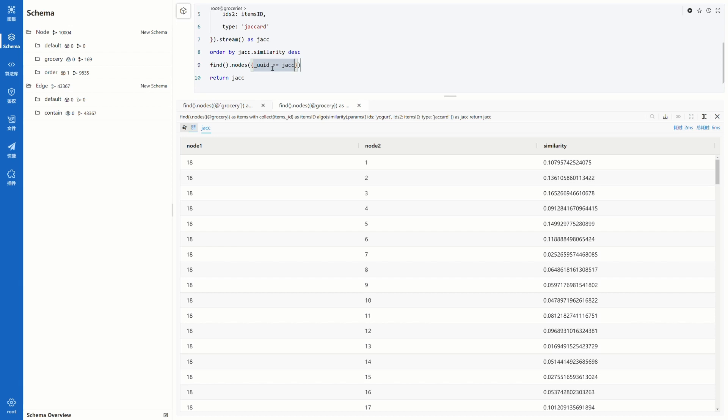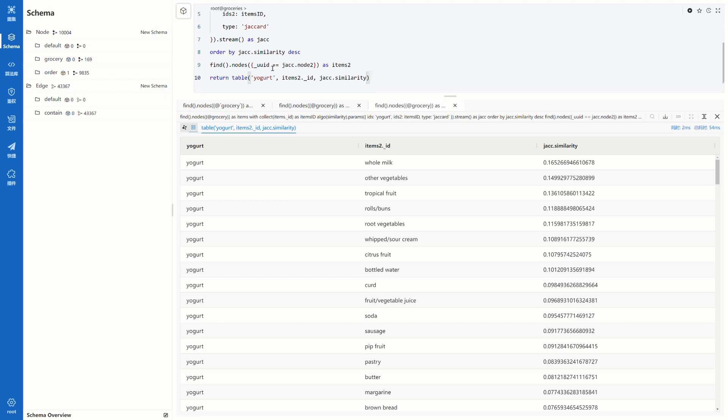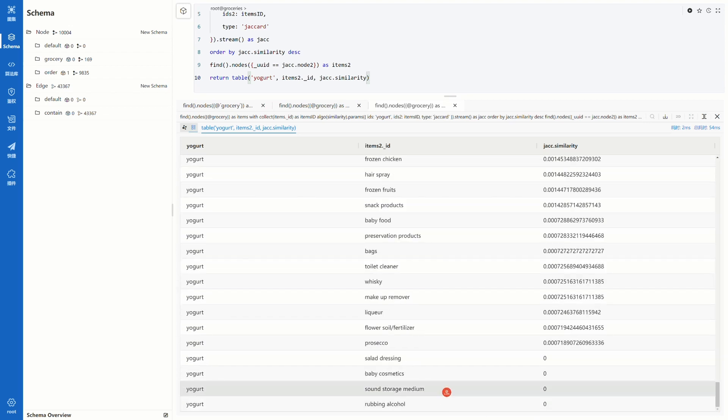Then let's turn all the UUIDs in the second column into IDs which are more readable. Find nodes by Jaccard node 2 as items 2. In the return clause, let's assemble a table. The first column is yogurt and then items 2 ID. Last is the similarity score. It looks nicer now. We find out that whole milk is the most similar grocery with yogurt followed by other vegetables, tropical fruit, and rosa buns. All the items in the first page are foods. If we scroll down to the bottom, we see there is no one ever purchased rubbing alcohol or sound storage medium with yogurt.